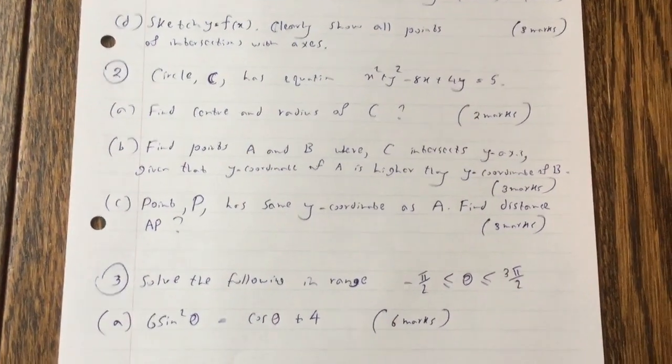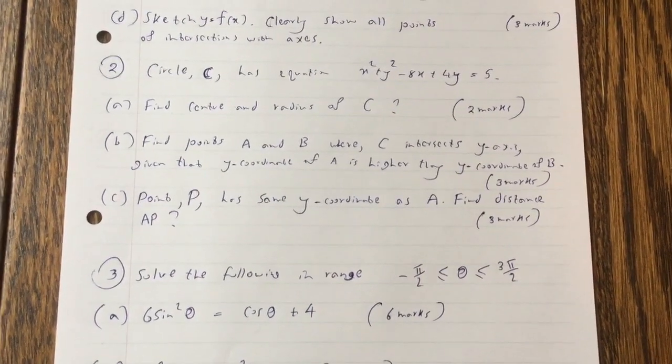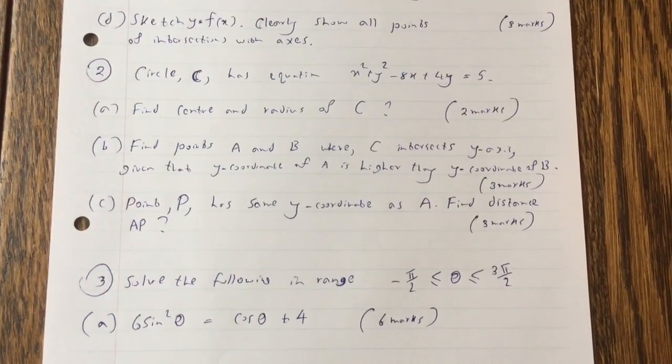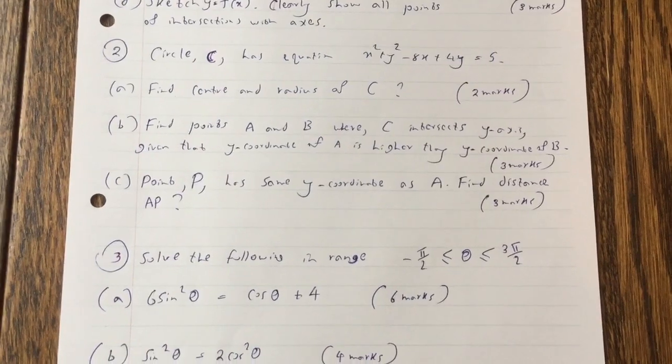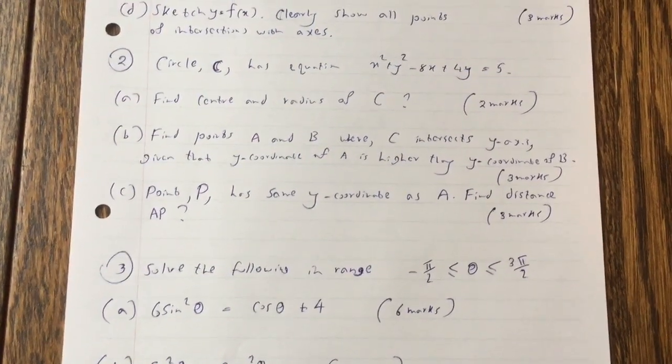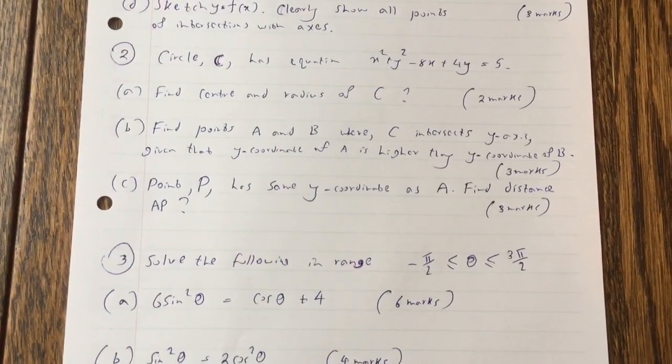Question B: Find points A and B where C intersects y-axis, given that y-coordinate of A is higher than y-coordinate of B. Question C: Point P has same y-coordinate as A. Find distance AP.